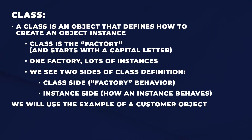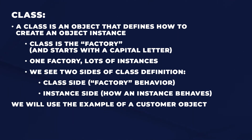A class is an object that defines how to create an object instance. There's an instance, and then there's the class. For example, if I have a Customer, the customer class is like the customer factory — I talk to the factory and create instances of actual customers. Each customer may have a name, address, and phone number, and each one will be an instance. The factory starts with a capital letter — one factory, lots of instances. A class definition has two sides: one says how the factory behaves, and one says how each instance behaves. We'll have an example in a follow-up video.